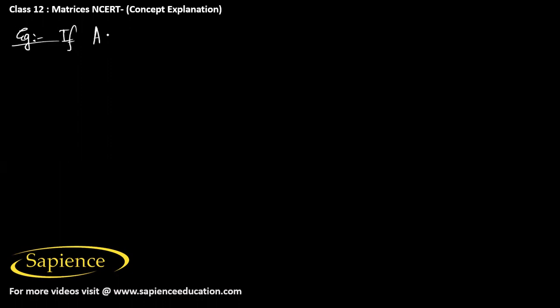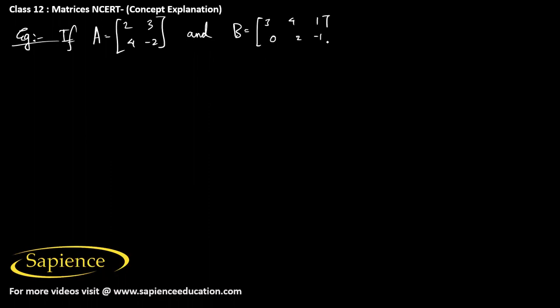Suppose matrix A is [2, 3; 4, -2] and matrix B is [3, 4, 1; 0, 2, -1]. We are asked to find the product AB and also the product BA.